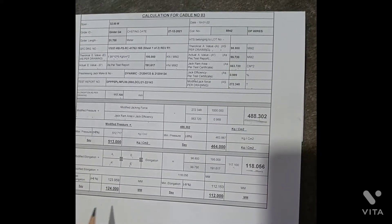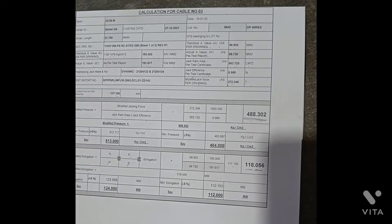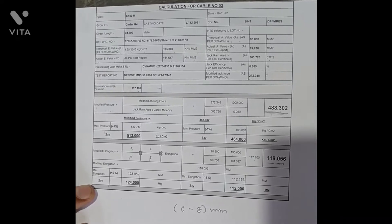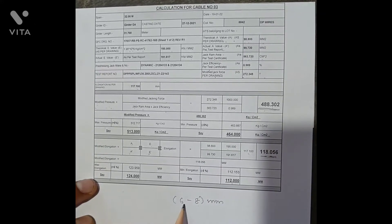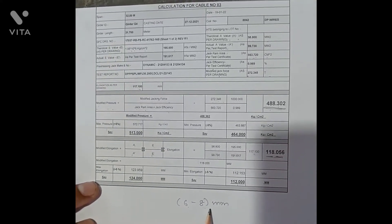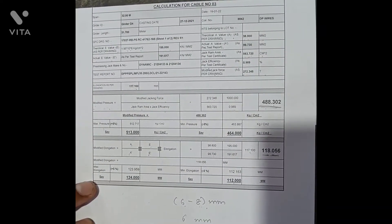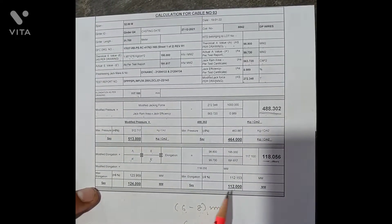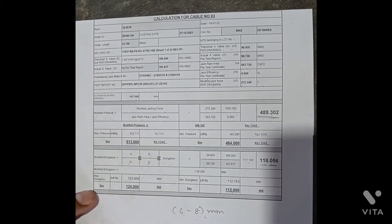Our elongation range is 112 to 124 mm. After subtracting slip, 6 to 8 mm slip always occurs when you lock and release the jack. In general practice, 6 mm is the theoretical slip value used in drawings, but practical execution gives 6 to 8 mm. So you subtract this from the elongation range.